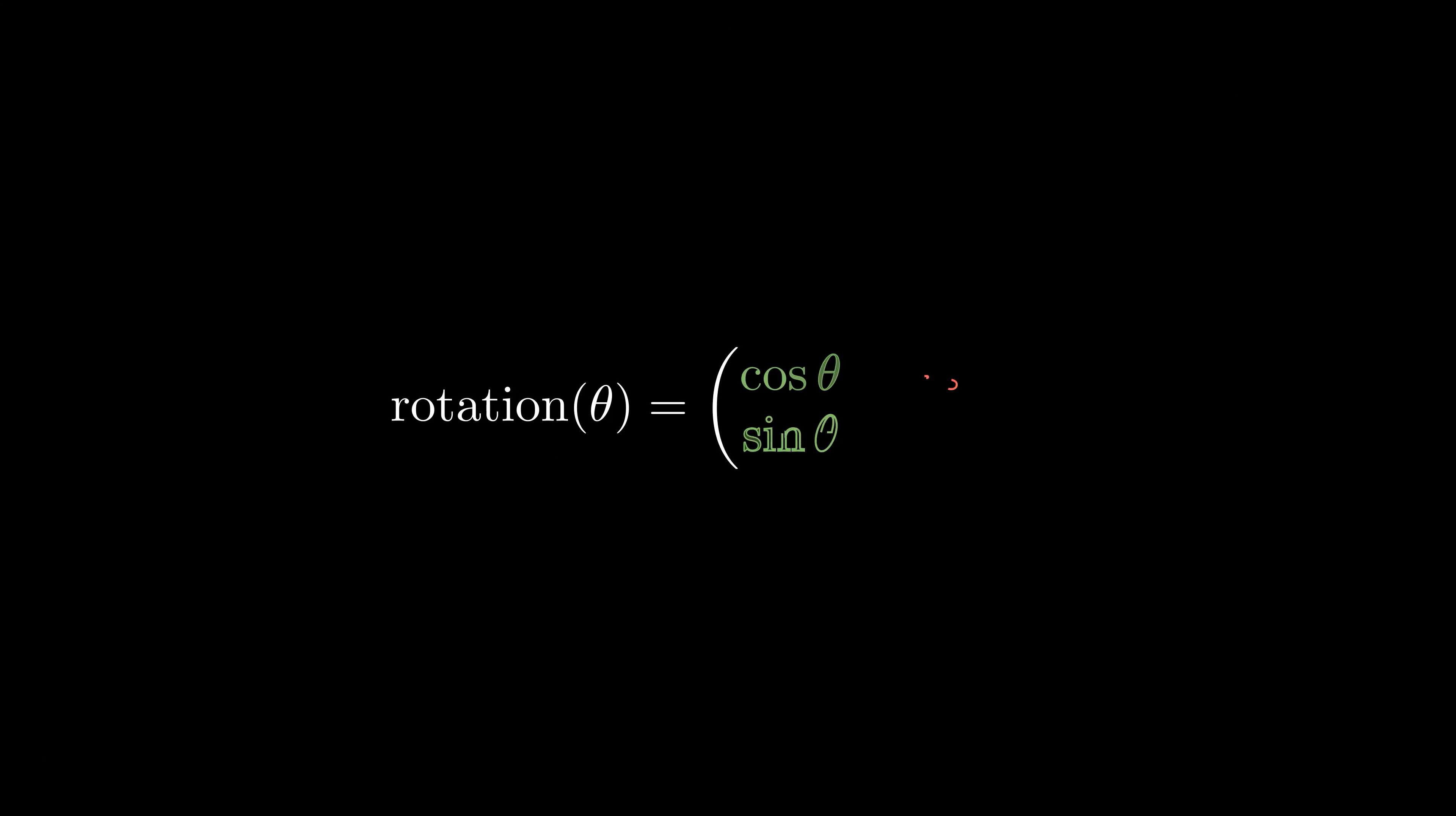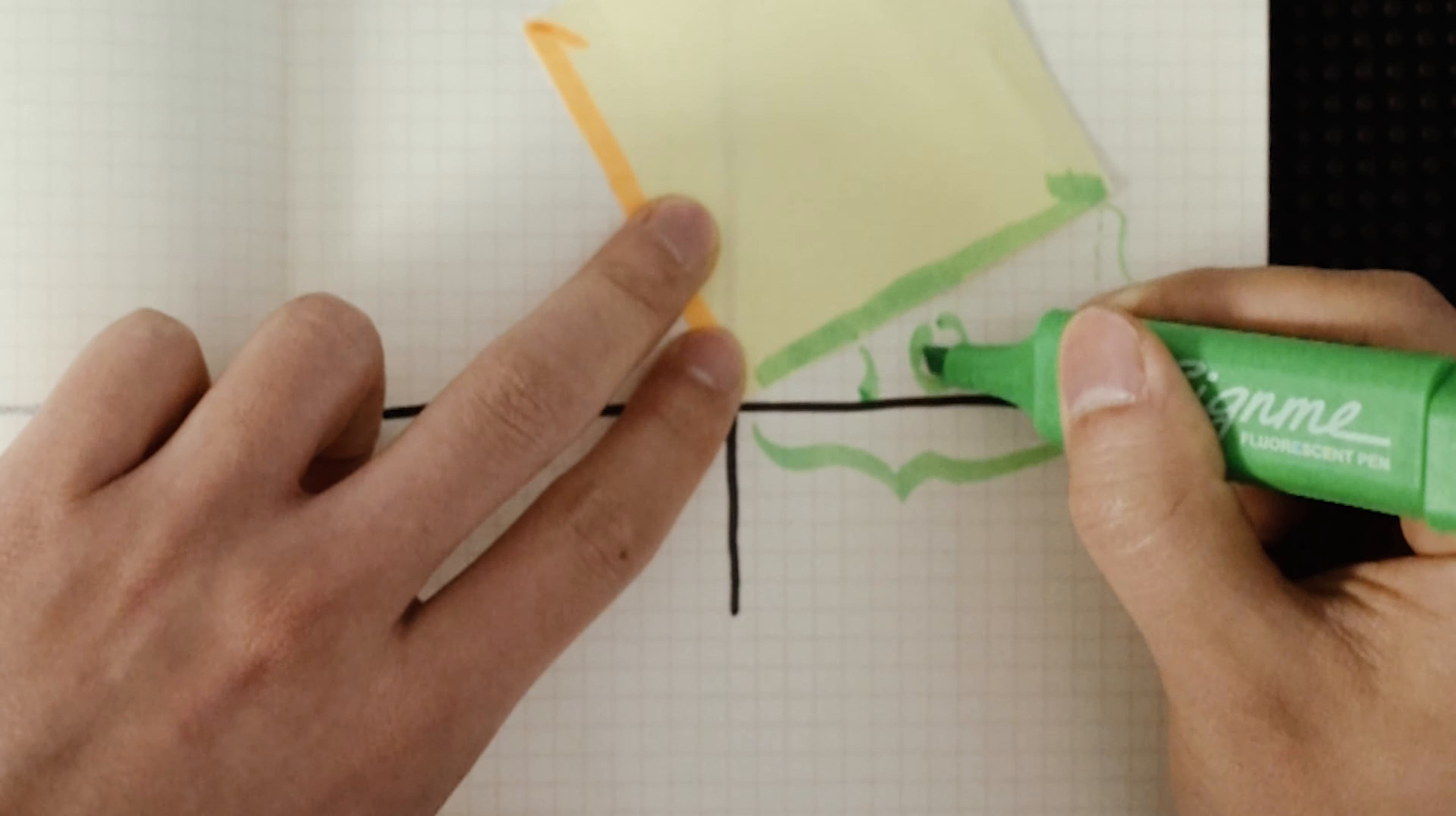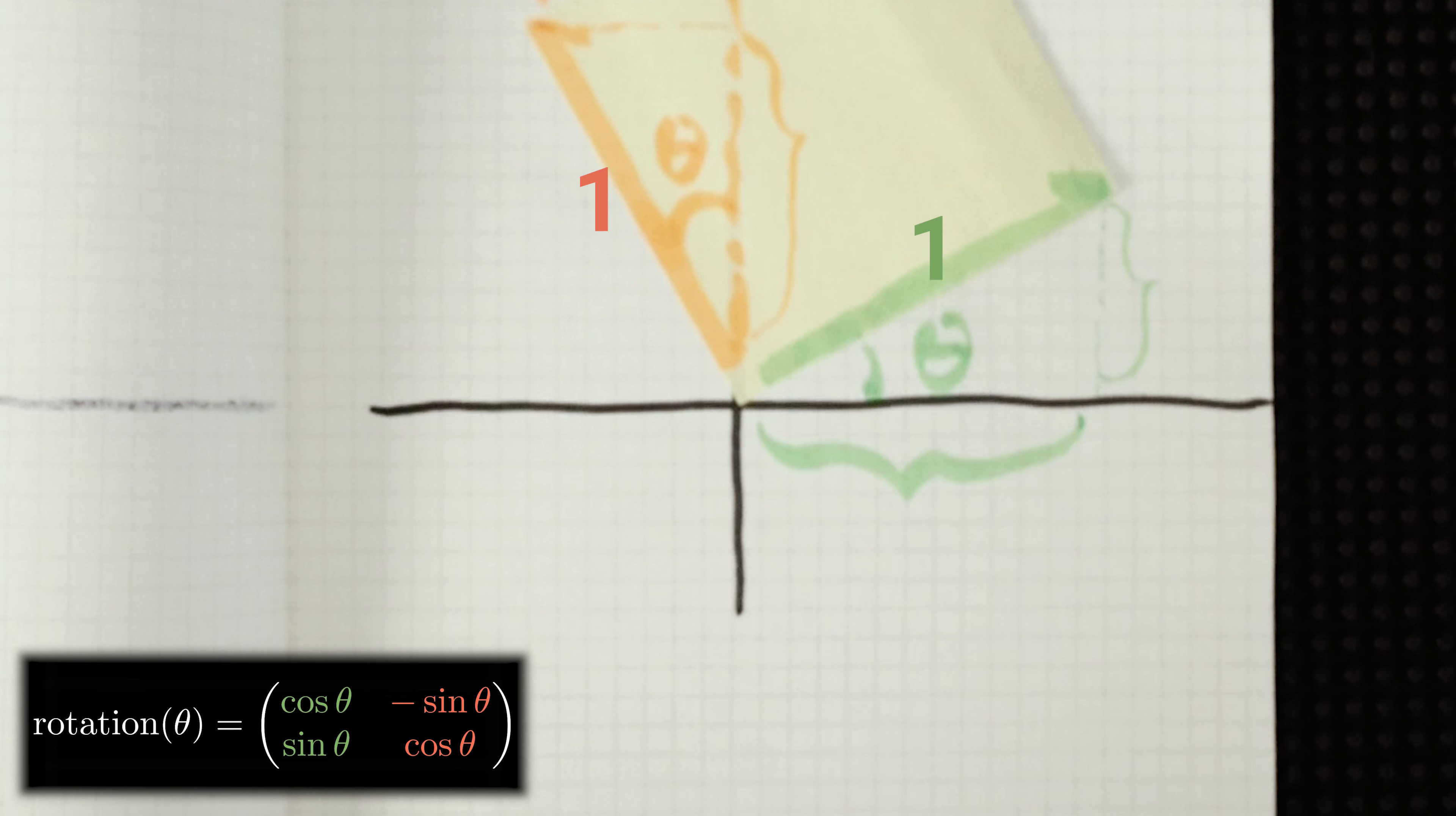Suppose you rotate the square with a certain degree theta. How would you measure the new x and new y of the x basis vector? Yes, you use the trigonometry function and angle theta.